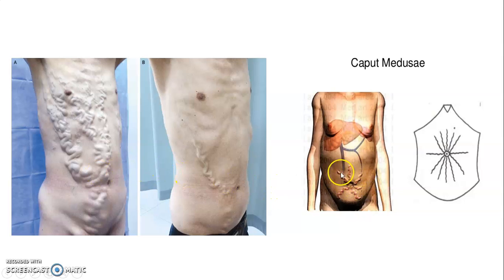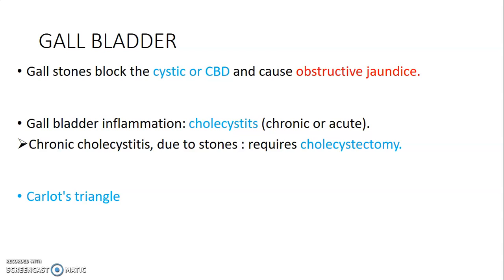Regarding gallbladder clinical aspects: gallstones can form and obstruct the cystic duct or common bile duct, leading to obstructive jaundice. Gallstones can also lead to acute or chronic cholecystitis, and in chronic cholecystitis the gallbladder is removed through a procedure called cholecystectomy.